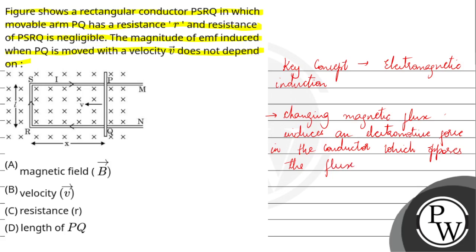If we write this EMF expression, then E is minus dΦ by dt, where E is the electromotive force, EMF, and Φ is the magnetic flux.